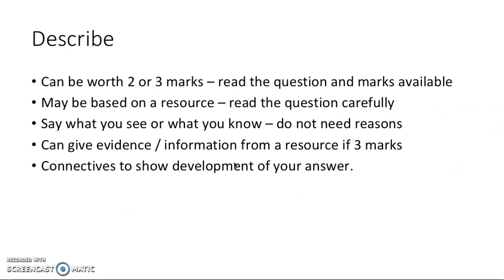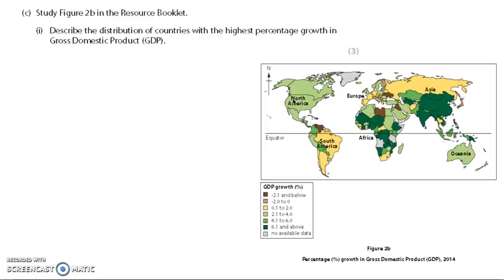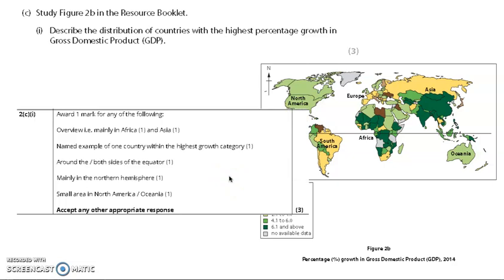Then we look at the describe questions. These can be worth two or three marks and read the question. See how many marks are available. It may be based on a resource. So read the question. Say what you can see. You don't need to give reasons and make sure you give evidence or information from the resource. And use connectives to show development of your answer. Okay, so it could be this shows, this means, as seen in. So what you need to put here. So have a look at this one. Describe the distribution of countries with the highest percentage growth in GDP. So look at the figures here. The highest growth. You're looking at the green ones. How can you describe where they are? Have a go at that now. And there's the answers for that one.